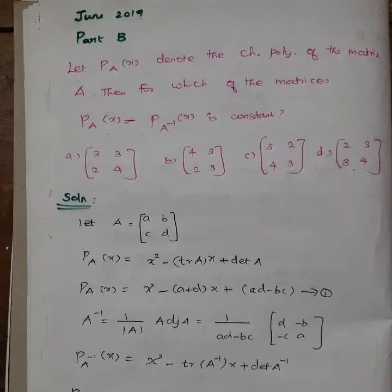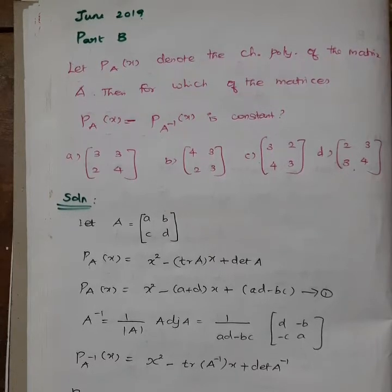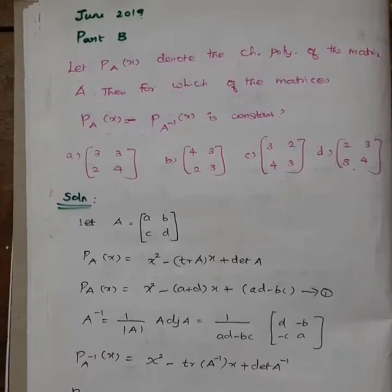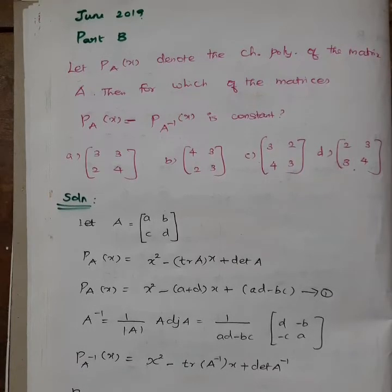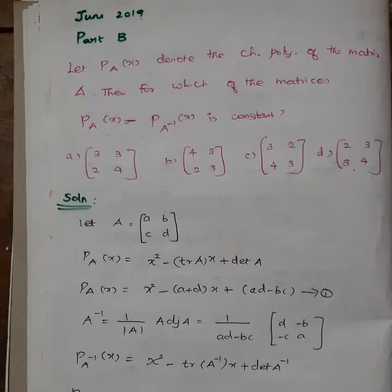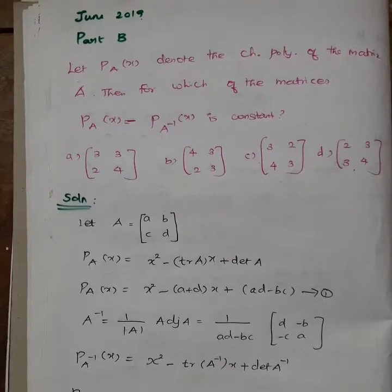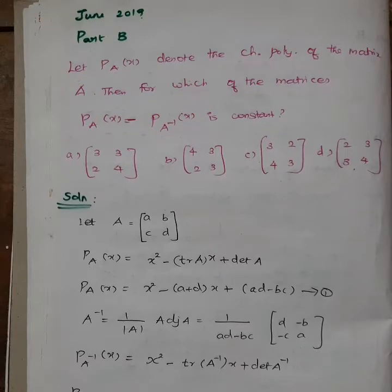Students, there are 4 matrices — all 2 by 2 matrices. You can compute PA of X and PA inverse. With 4 options, don't waste time checking each one individually. You can directly get 3 marks by being smart about it.